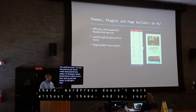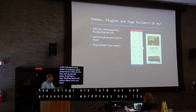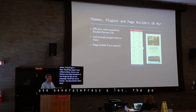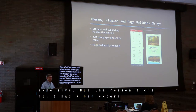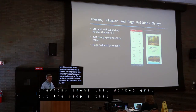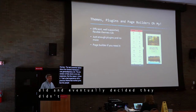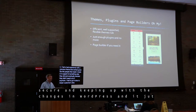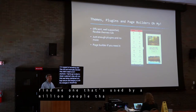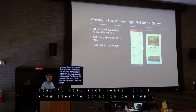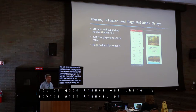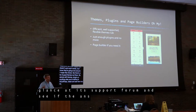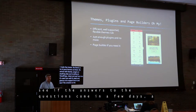WordPress doesn't work without a theme. Your theme is your very basic framework for how things are laid out and presented. WordPress comes with some of its own themes, and there are others you can use. The last presenter talked about the Genesis framework. I use GeneratePress a lot — the Pro version, which is not very expensive. I chose it after a bad experience with a previous theme where the makers eventually decided to stop supporting it, and I had to go to about a dozen customer sites and replace the theme. My advice with themes, plugins, or anything else you're adding to WordPress: check how much it's used, how well it's rated, and look in its support forum to see if questions are answered in days, weeks, or never.